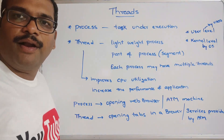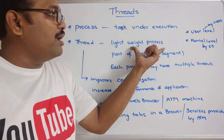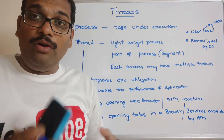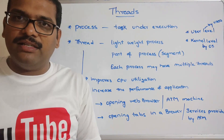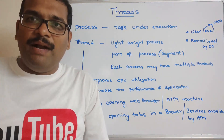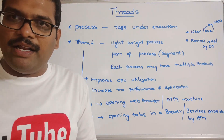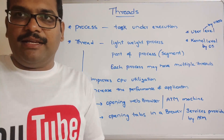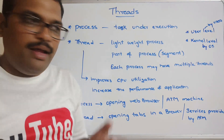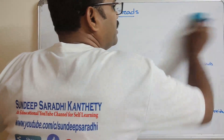A process is a task under execution and a thread is a lightweight process — it's a part of a process or a segment of a process. Each process may have multiple threads. Running multiple threads concurrently is called multi-threading, and running different processes simultaneously is called multi-tasking. Multi-tasking means executing more than one task at a time, and multi-threading means executing more than one thread at a time.